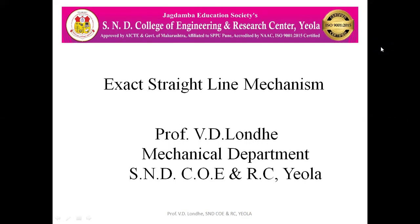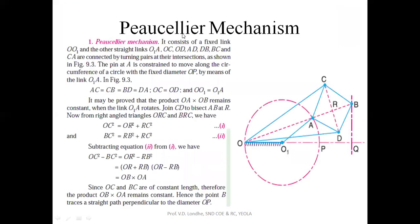We will see what mechanisms trace a straight line path. First is the Peaucellier mechanism. In this mechanism there are eight links: O₁ is the fixed link, O₁A is the crank, then links AC, BC, BD, and ED, the bigger link OC, and OD is the eighth link. The Peaucellier mechanism consists of eight links in which the link length AC equals BC equals BD equals AD.